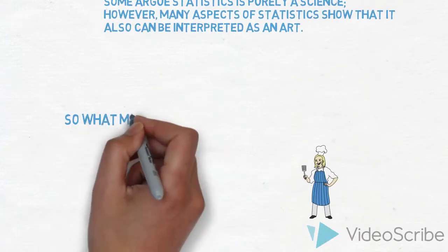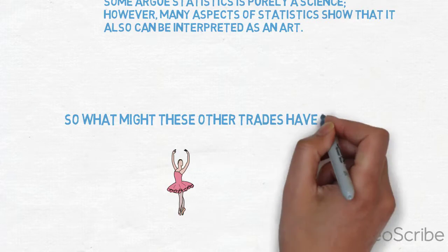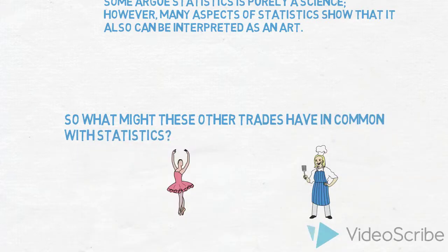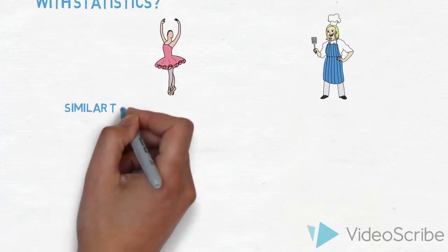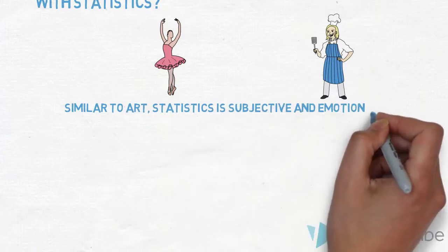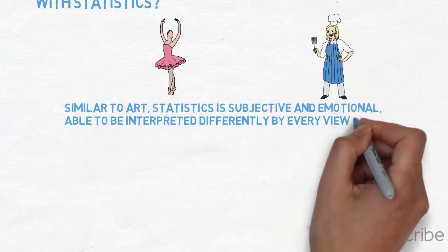So what might the field of statistics have in common with these fields that might make it an art? One claim to statistics as an art is the fact that statistics is subjective, often interpreted differently by every viewer, differing from the scientific norms of objectivity.